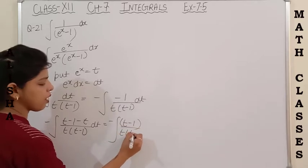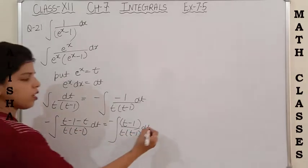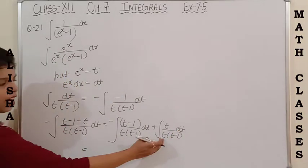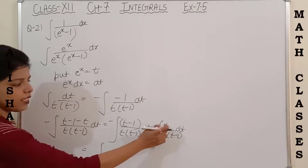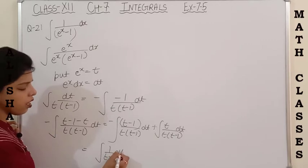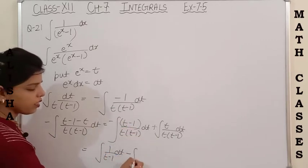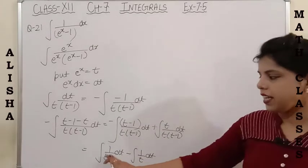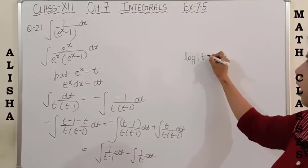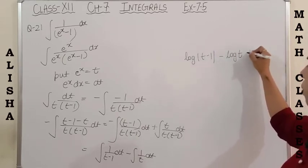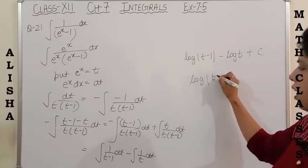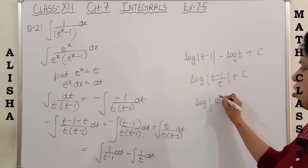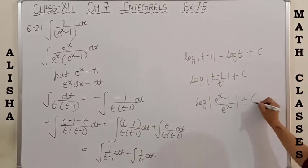Splitting into two parts: [t−1 upon t(t−1)] dt and plus [t upon t(t−1)] dt. Simplifying: the first gives 1/(t−1) dt and the second gives minus 1/t dt. Integrating: log(t−1) − log t + C, which equals log[(t−1)/t] + C. Finally replacing t = eˣ: the answer is log[(eˣ−1)/eˣ] + C.